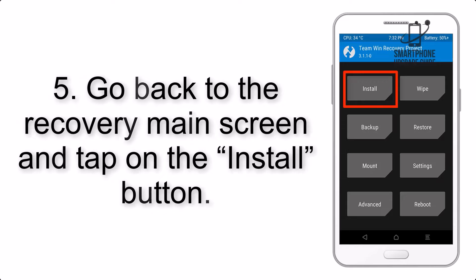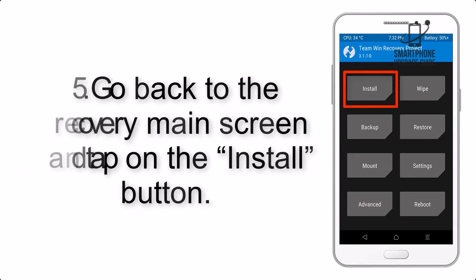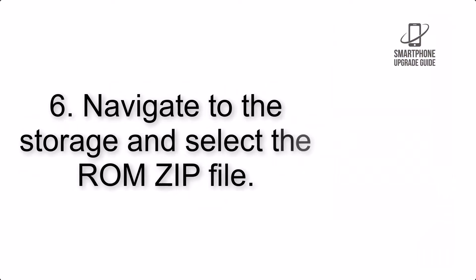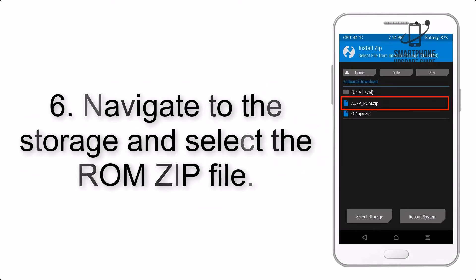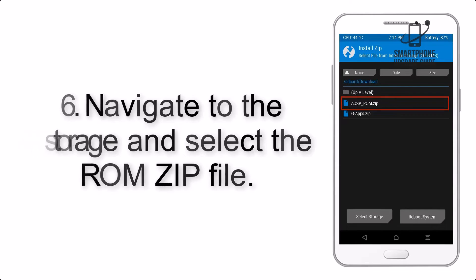Step 5: Go back to the Recovery main screen and tap on the Install button. Step 6: Navigate to the storage and select the ROM ZIP file.